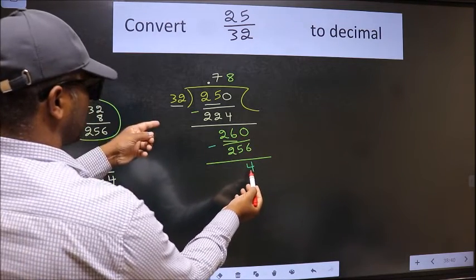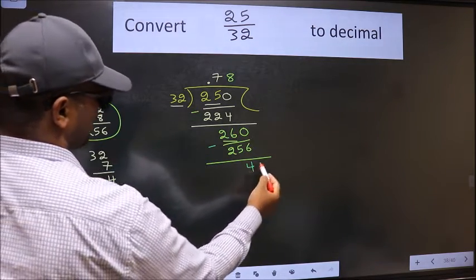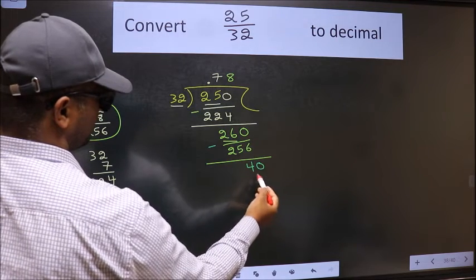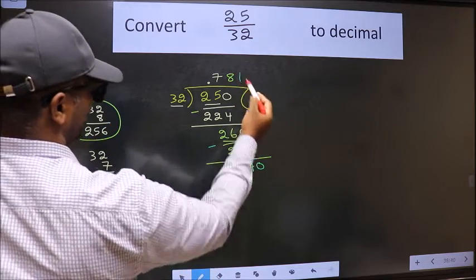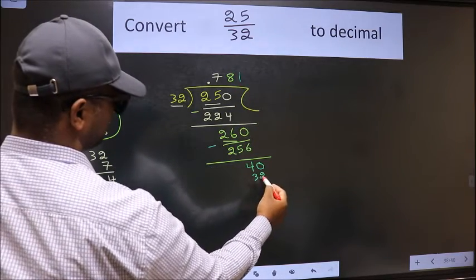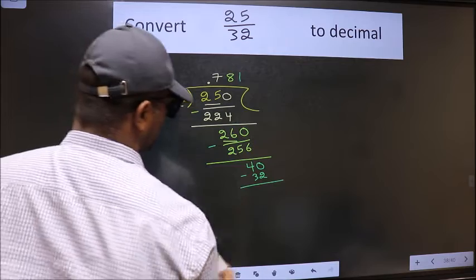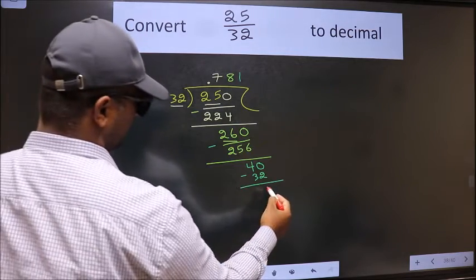4 is smaller than 32, and we already have the decimal, so directly take 0. So 40. A number close to 40 in the 32 table is 32 once, 32. Now we should subtract. We get 8.